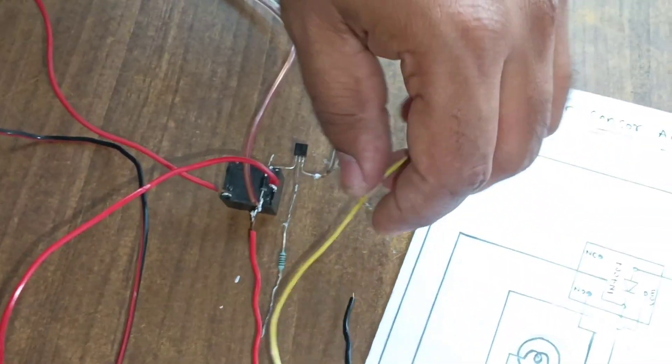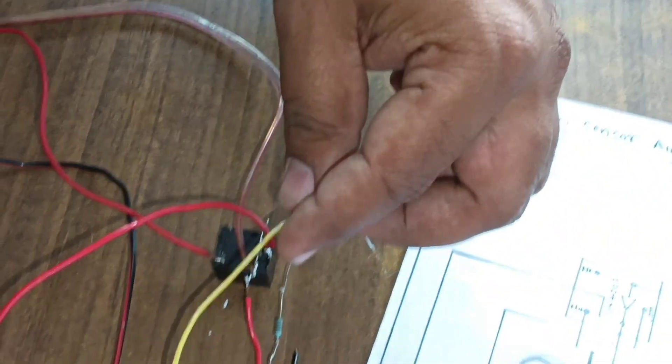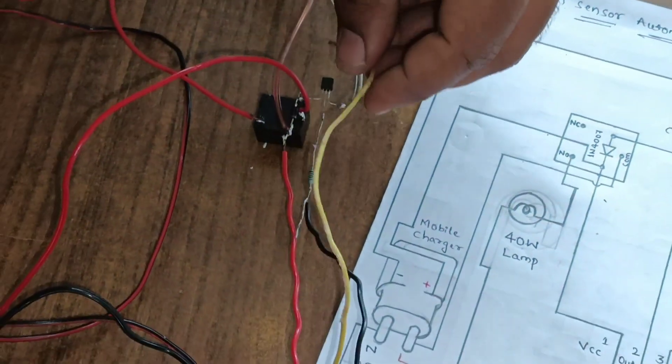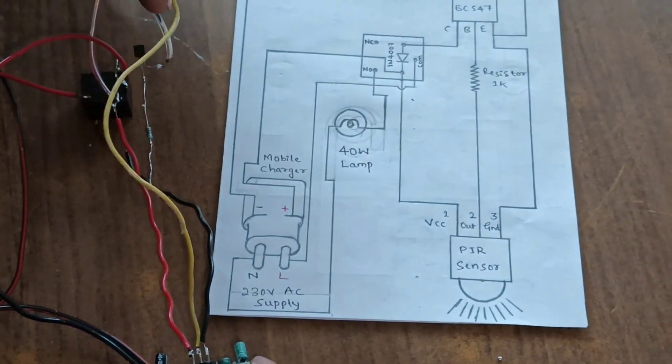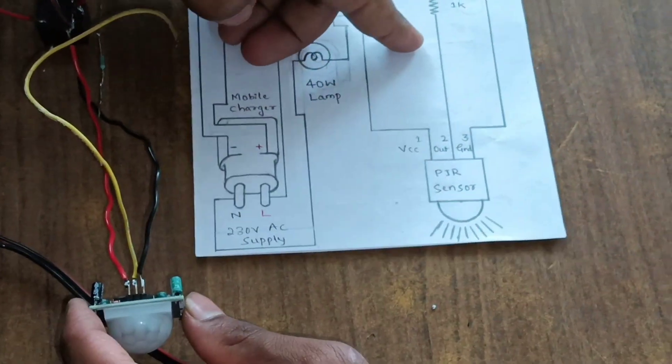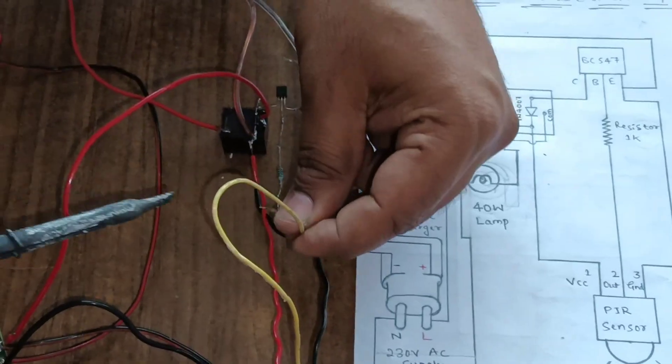And common is connected to common. Yellow color wire is connected to one k resistor output is connected to resistor.